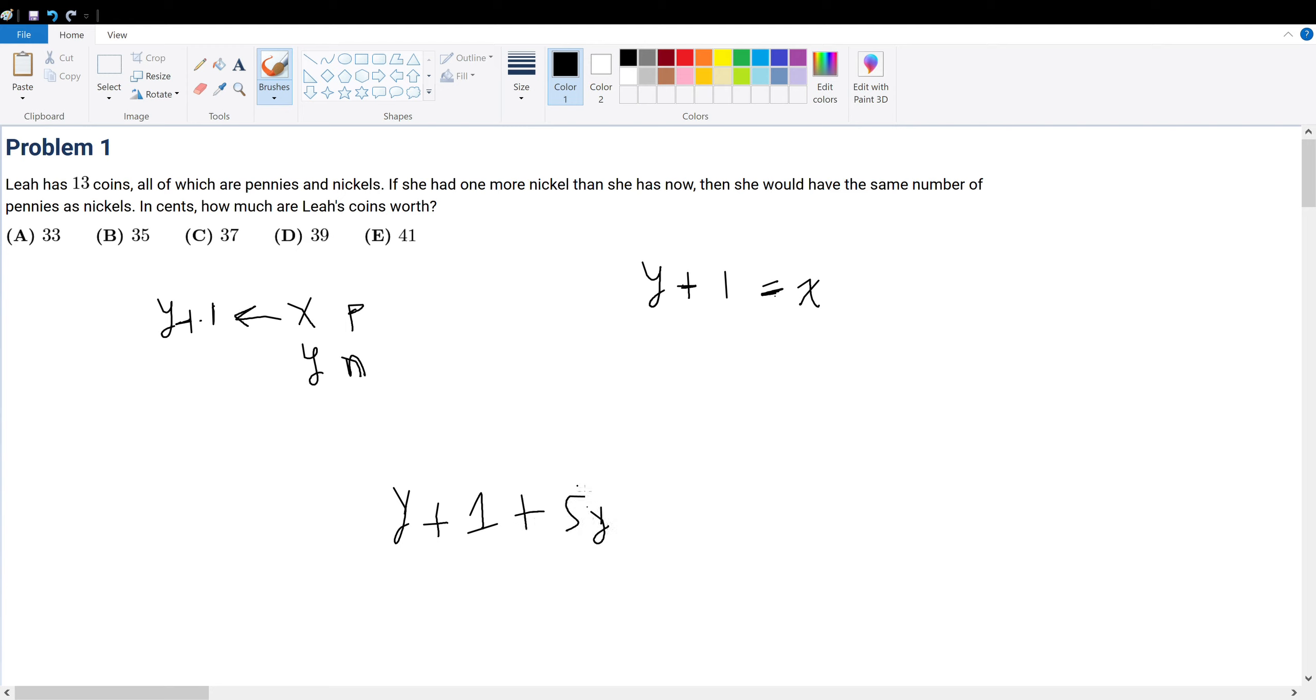So that means one of the answer choices, once you plug it in to be equal to 6Y plus 1, must give a constant whole number for Y.